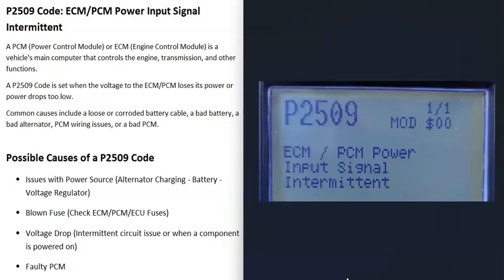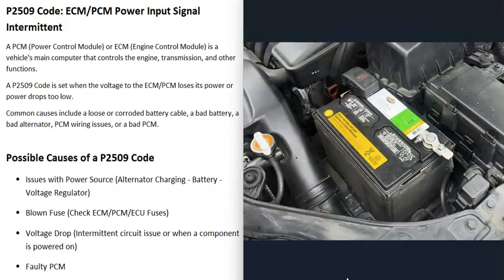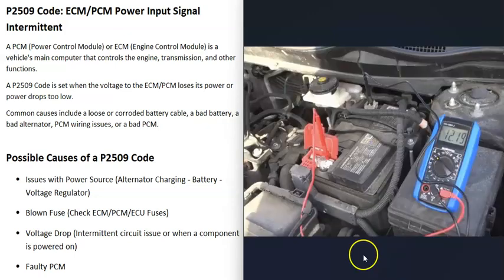One possible cause of a P2509 code is any kind of issue with the power supply going to the computer — such as a problem with the alternator, the battery, or a bad voltage regulator. The first thing to do is check your battery terminals, making sure they're connected properly and that there's no corrosion, because bad connections or corrosion can cause problems.